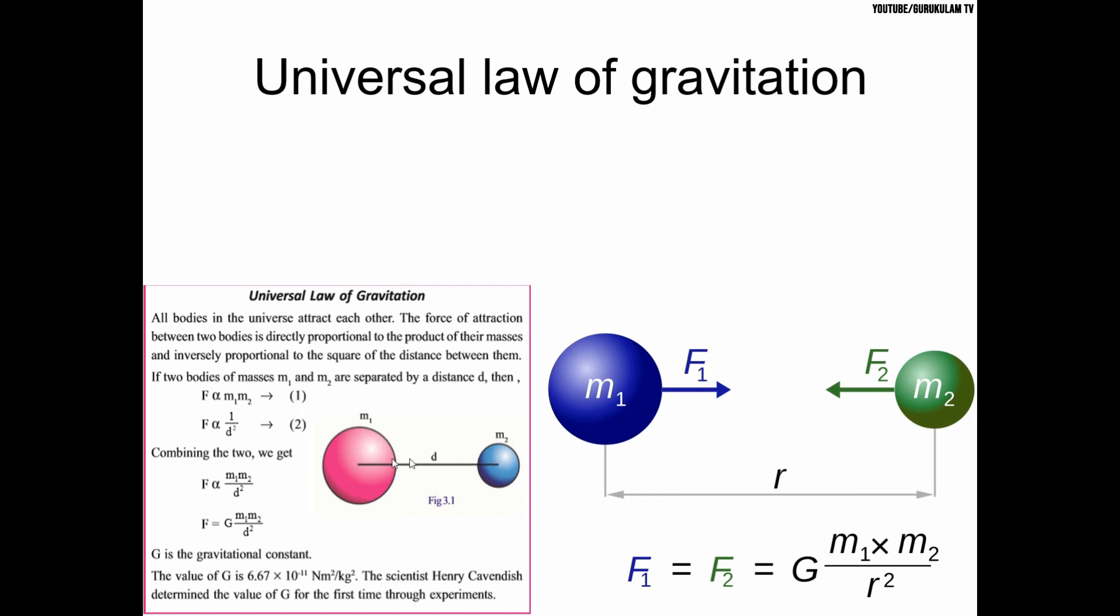All objects in this earth attract each other. The force is between any two objects. The force is directly proportional to m₁ and m₂. The force is directly proportional to mass, and force is inversely proportional to the square of distance between them. These are the conditions.